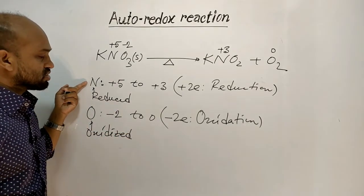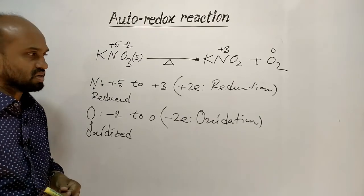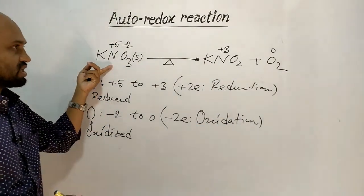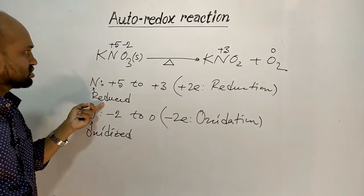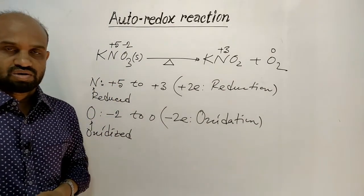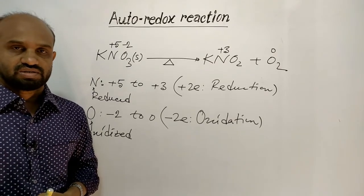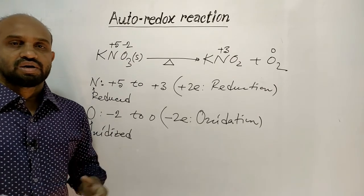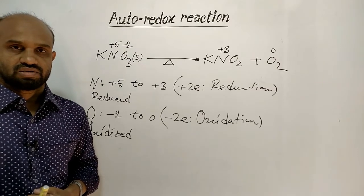In this reaction, oxidation and reduction happen at the same time, making it a redox reaction. One element of the reactant molecule is reduced and another element of the same reactant molecule is oxidized — this is the autoredox reaction. Autoredox reaction is defined as when one element of a reactant molecule is oxidized and another element of the same reactant molecule is reduced, then the reaction is called an autoredox reaction.